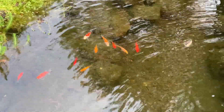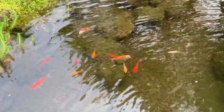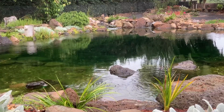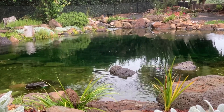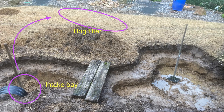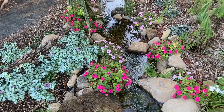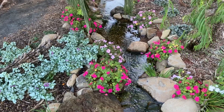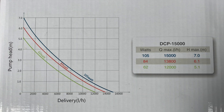Now that doesn't mean I run out and buy a 6,000 litre per hour pond pump. A 6,000 litre per hour pump will deliver 6,000 litres per hour if it's just pumping water around within the pond. But I need to pump the water from the intake bay up into the bog. The elevation difference between the pond and the bog is approximately half a metre — this is called head height. The higher the head height, the less water will come out on the other end. All pumps will have a graph or chart showing how much flow can be expected at certain head heights.